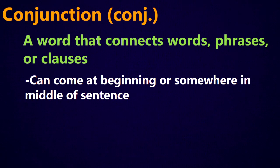Conjunctions can come at the beginning or somewhere in the middle of a sentence, but because conjunctions are connecting words, they don't normally come at the very end of a sentence — there has to be something after the conjunction to connect to.